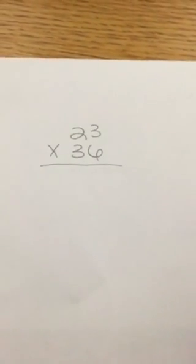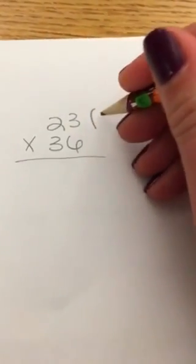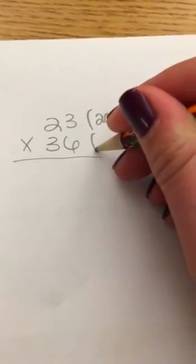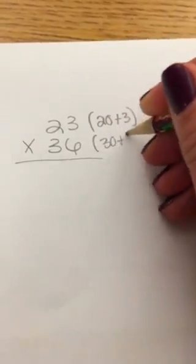I have my problem set up here on my paper and I've written it with a pencil, 23 times 36. The first step I'm going to do is break apart my numbers in place value. So I'm going to break apart 23 by doing 20 plus 3 and I'm going to break apart 36 by doing 30 plus 6.